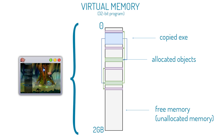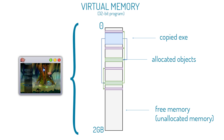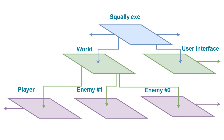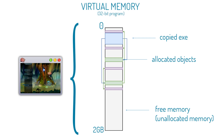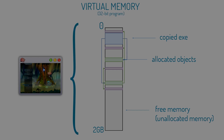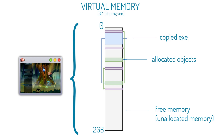Here is something important to note: when objects are allocated, they are allocated at random positions. So if we took the same game, closed it, and opened it again, it might end up like this — the objects start at different addresses in memory. Run it again and it's in a different spot. Here we have all of our game objects; restart the game, restart the game — it's kind of always a different position.